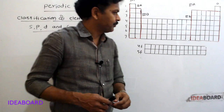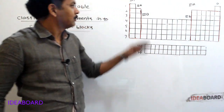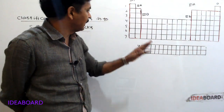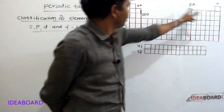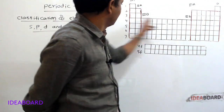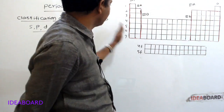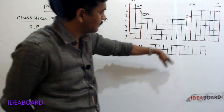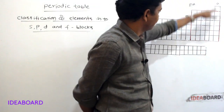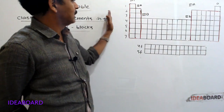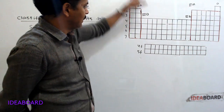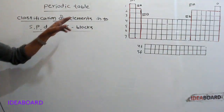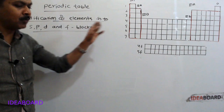The modern periodic table, our long form of periodic table, contains 7 periods and 18 groups. Horizontal rows are called periods and vertical columns are called groups. Now, classification of elements into S, P, D, and F blocks.